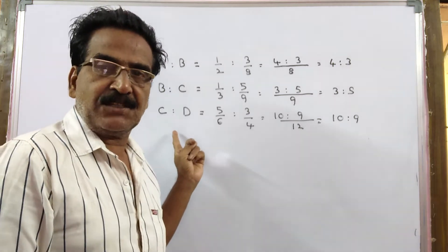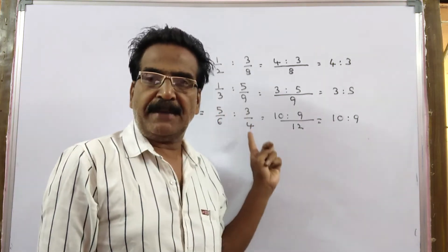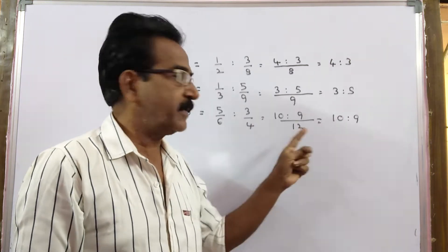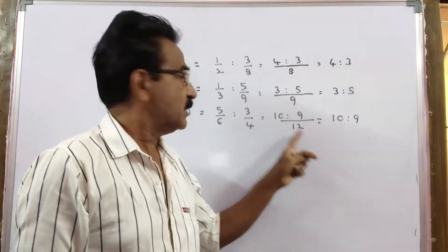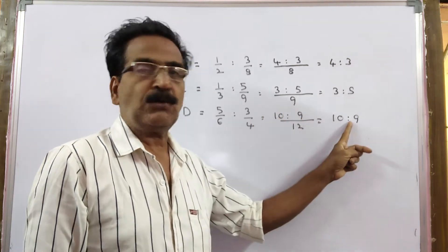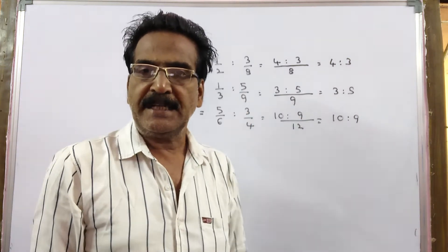The same way C is to D, 5 by 6 is to 3 by 4. Here LCM is 12, LCM of 6 and 4 is 12. 6 is 2, 2 5 is 10, 4 3 is, 3 3 is 9. So C is to D is equal to 10 is to 9.